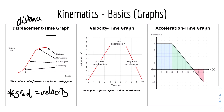Think of it this way: if we have distance against time, and two seconds pass but your distance is still the same, that means you're stationary. And the maximum point on the displacement-time graph is the point furthest away from the starting point.